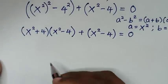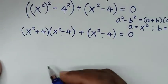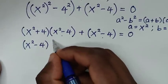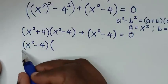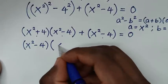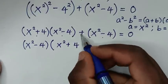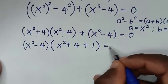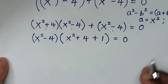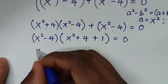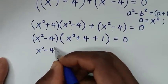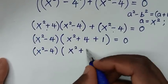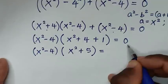In the next step, (x² - 4) is common, so we factor it out. Dividing through gives (x² - 4) times (x² + 4 + 1) equals 0, which simplifies to (x² - 4)(x² + 5) equals 0.